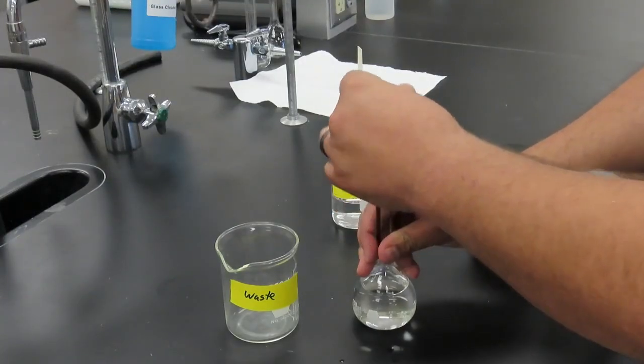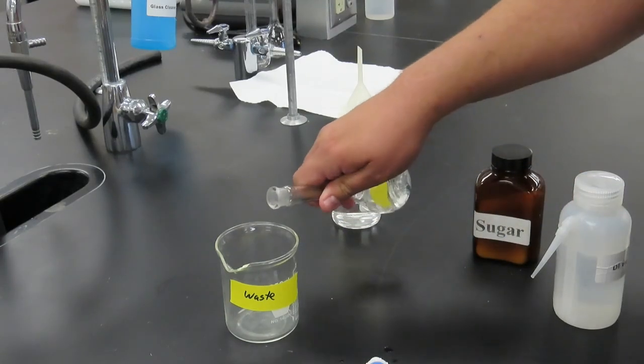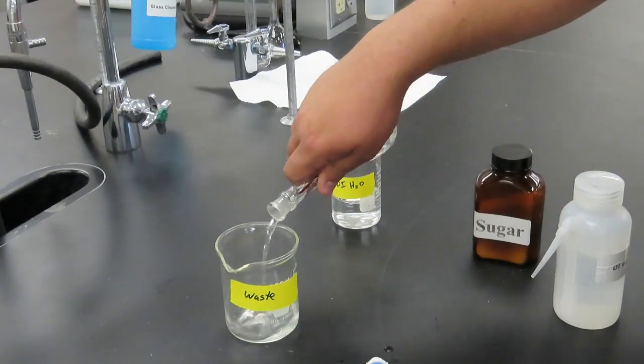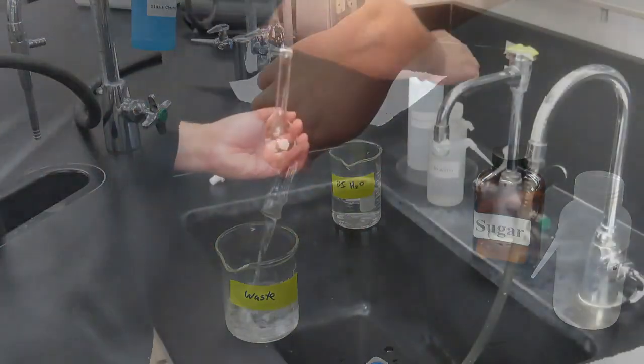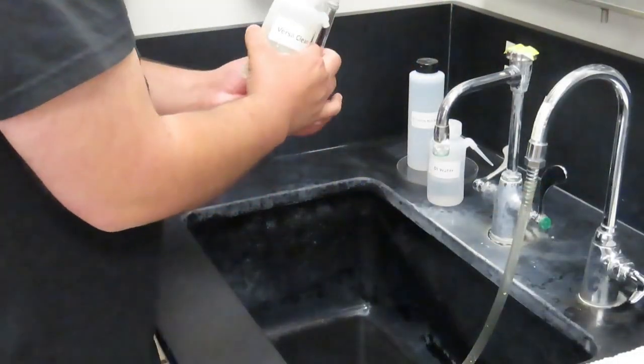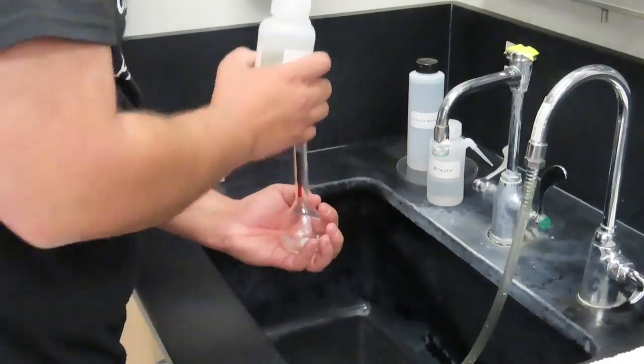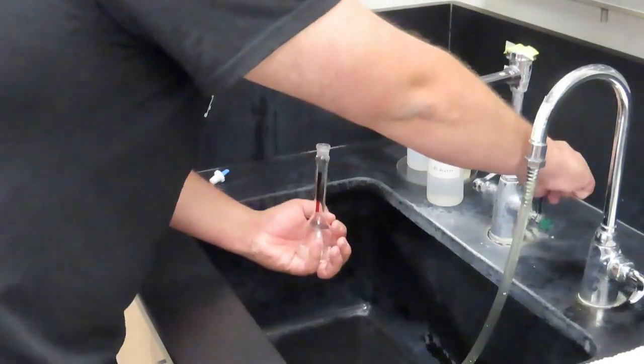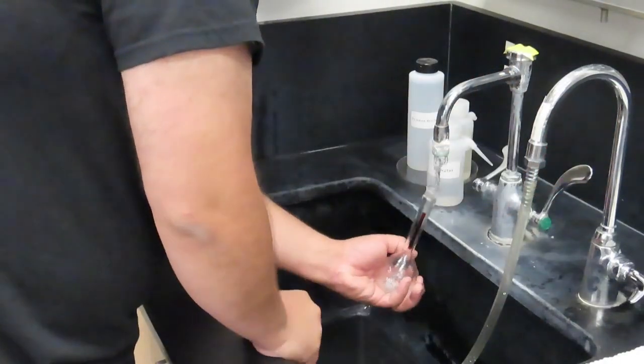Once your experiment is completed, you will pour the solution into the waste container, dispose of the waste, and be sure to wash out all your instruments. Here we demonstrate pouring some soap into the volumetric flask. Make sure you use a little. A little does go a very long way.